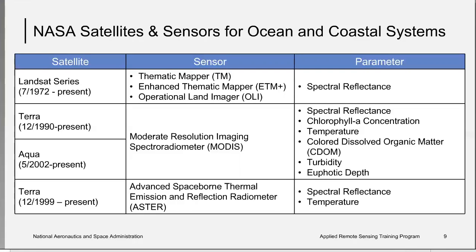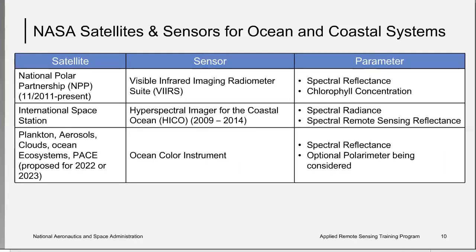The Terra and Aqua satellites each host a Moderate Resolution Imaging Spectrometer, or MODIS, which senses both reflected visible radiance and emitted thermal energy. MODIS is used for land, ocean, and atmospheric applications and is used to infer several parameters useful for understanding ocean biology, carbon dynamics, and circulation. The SUOMI NPP hosts VIIRS, used for spectral reflectance and to infer chlorophyll concentration. The ISS hosted HICO, the Hyperspectral Imager for the Coastal Ocean, for five years from 2009 to 2014. Also under development is the PACE — Plankton, Aerosols, Clouds, Ocean Ecosystems — satellite.